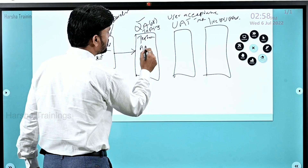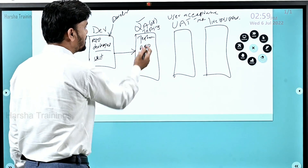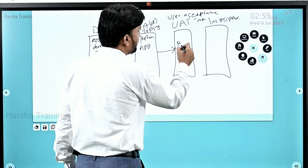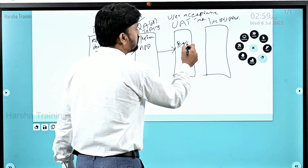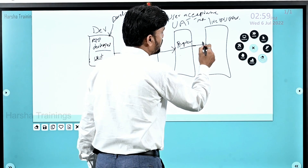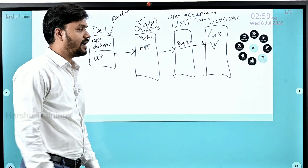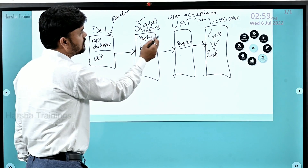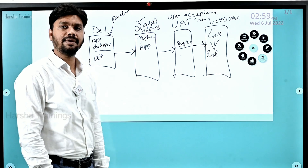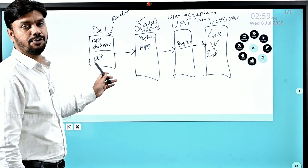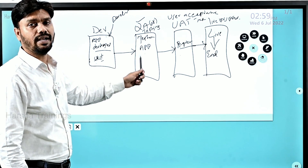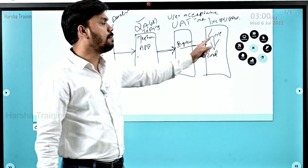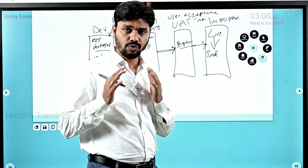Testers log into the QA server and test the application that has been moved from development. Once testing is successfully done, the application is moved to the next level — the UAT server — where regression testing is done. Testers log in here as well. Once regression testing is done, the application is moved to live. Once it's on live, it is available for end users. For Amazon, common people like us are the end users.